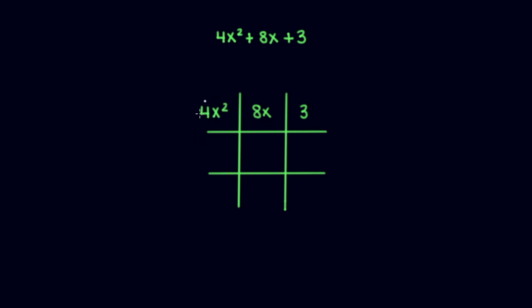We can also factor 4x² as 2x times 2x and 3 will still factor out to be 1 and 3. Now, if we multiply 2x times 3, we get 6x. If we multiply 2x times 1, we get 2x.